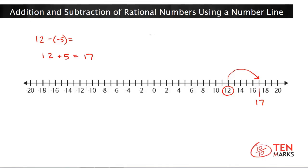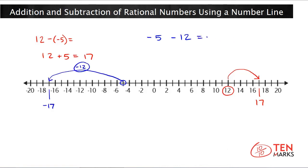Now let's reverse the order of these numbers. What if negative 5 comes first and I subtract away 12? So now it's negative 5 minus 12. I would start at negative 5, right here, and count back — subtraction means go to the left, and there's nothing telling me to do anything different. So go to the left 12 places. I land on negative 17. So negative 5 minus 12 makes the difference increasingly negative — you get negative 17.